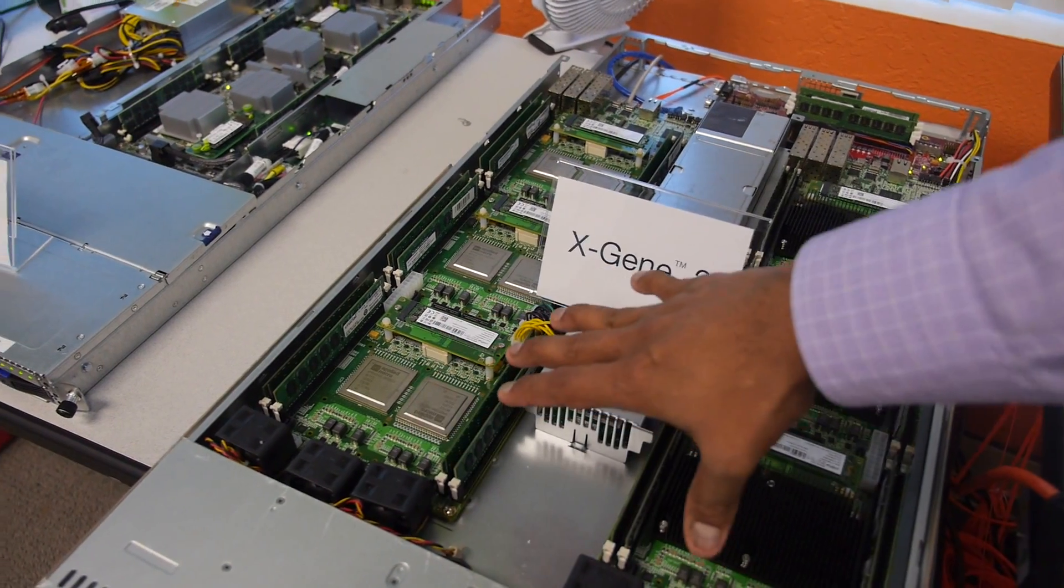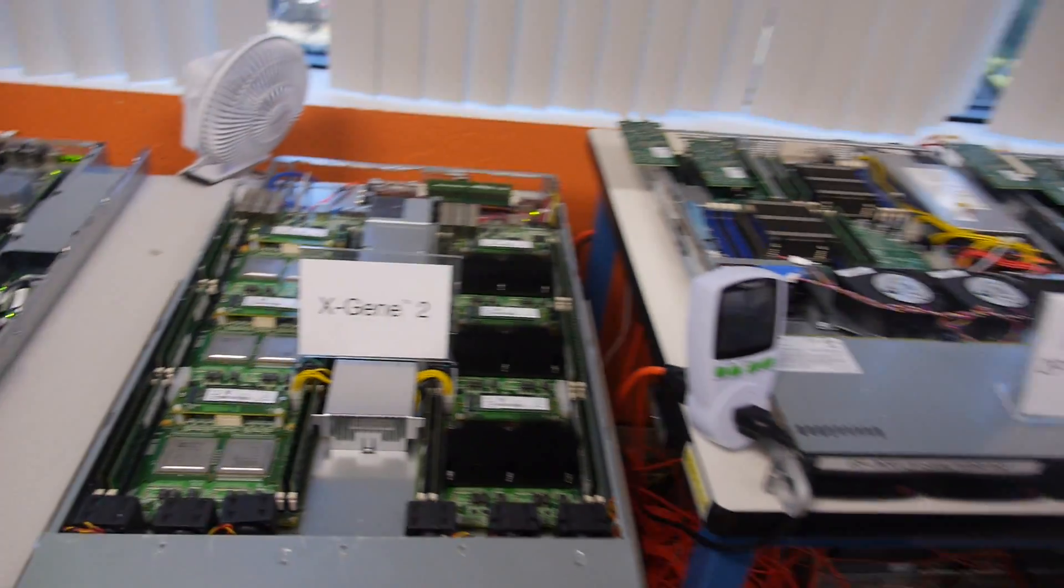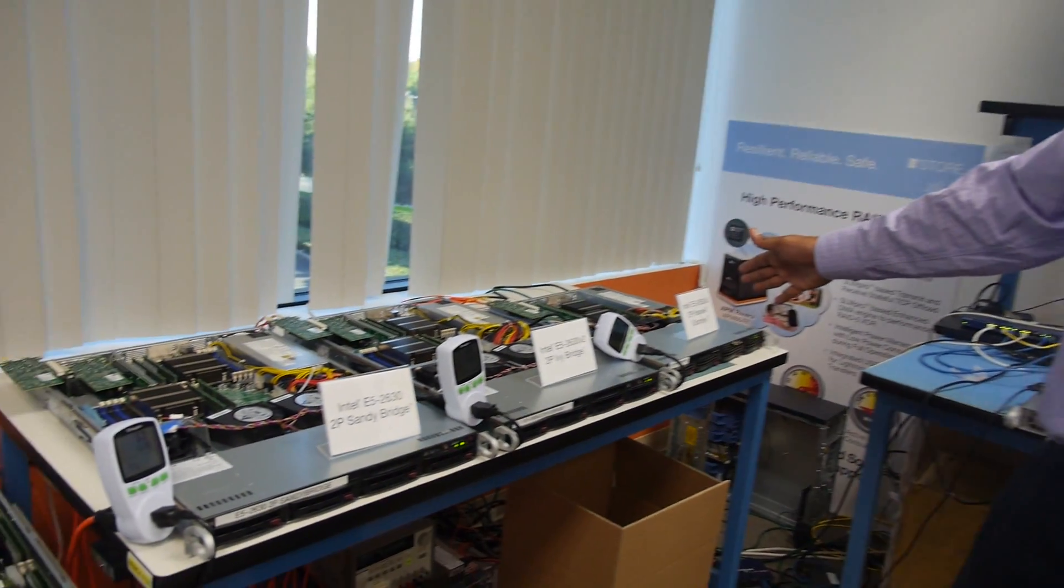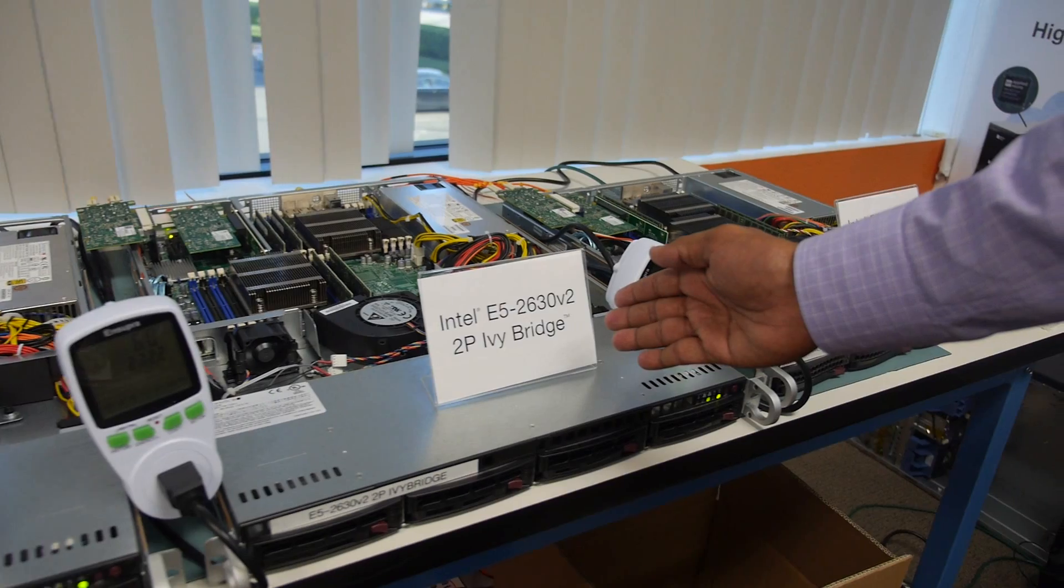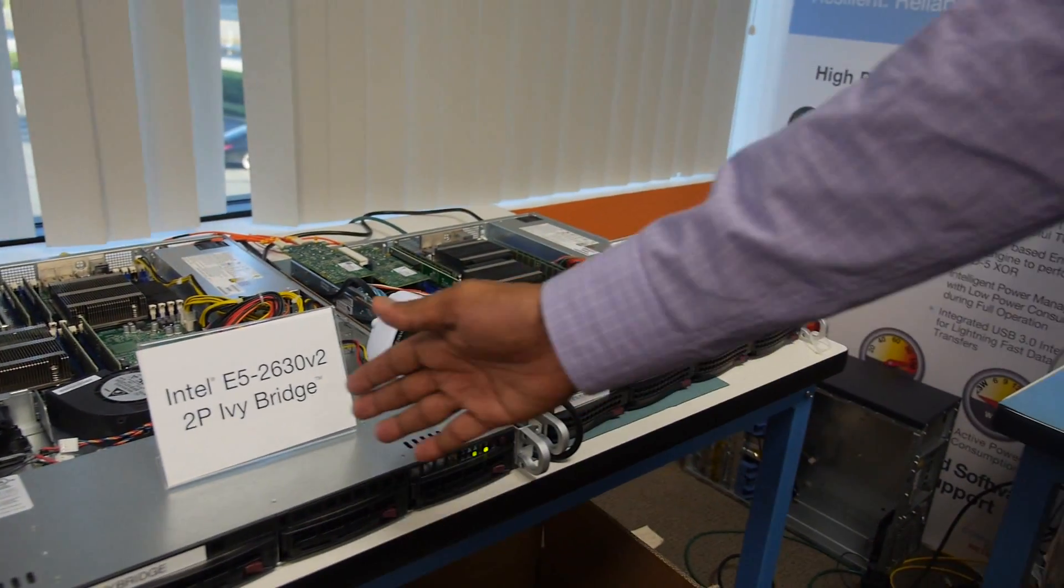This is a similar board that we have with X-Gene 1 and X-Gene 2. And on the comparison side, we have three families from Intel: the E5-2630, which is the Sandy Bridge platform; the V2, which is the Ivy Bridge platform, 22 nanometers from Intel; and the Haswell, which is the V3.